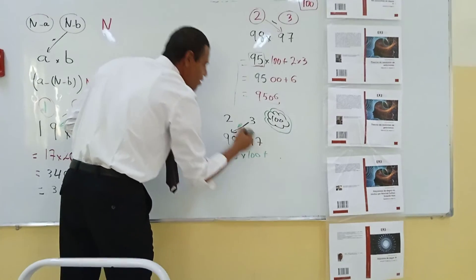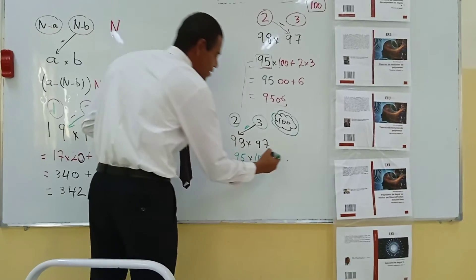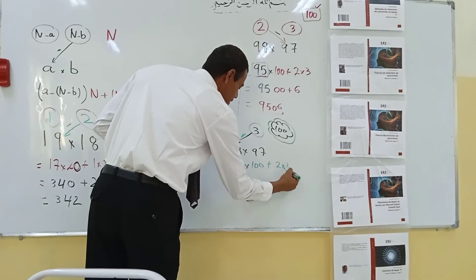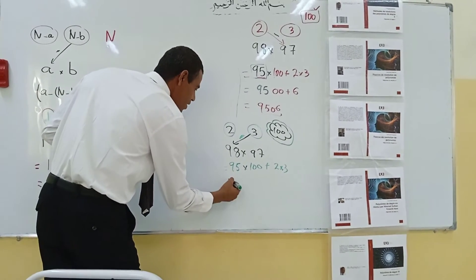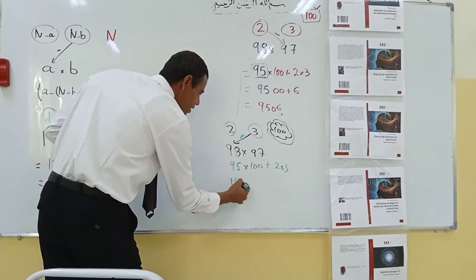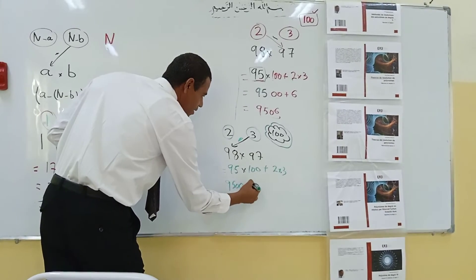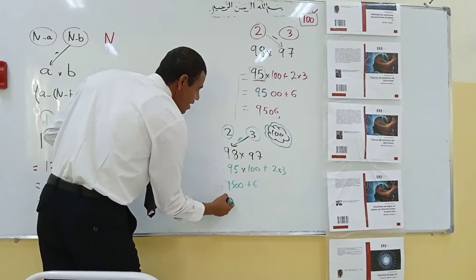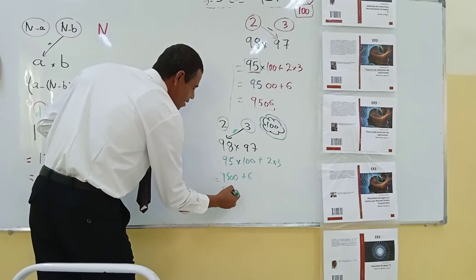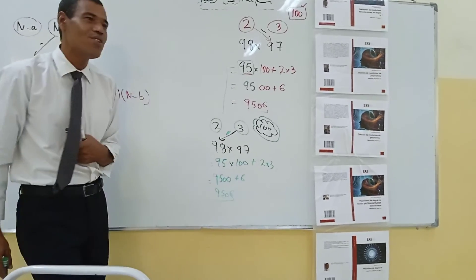Then plus the product of 2 multiply by 3. This gives 9500 plus 6. The last answer is 9506. Did you get the point? Yes.